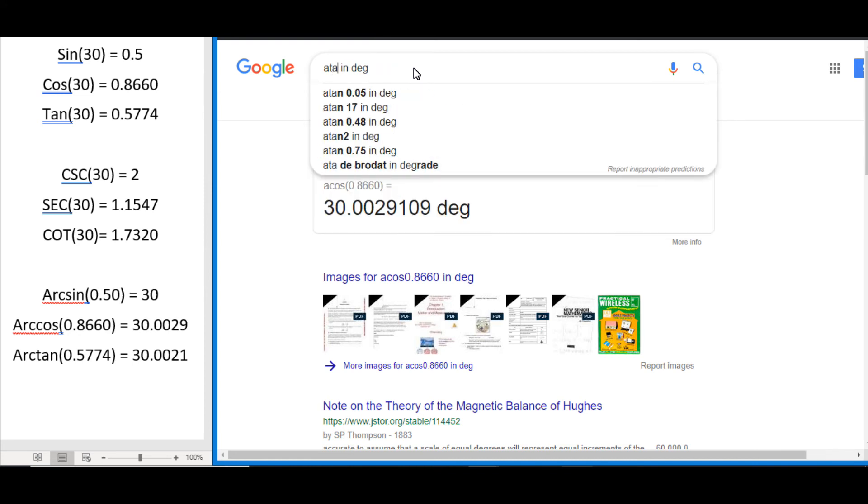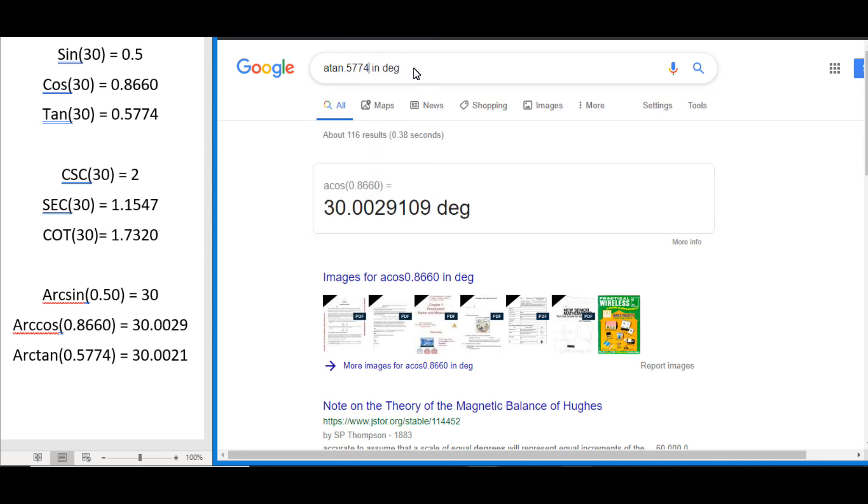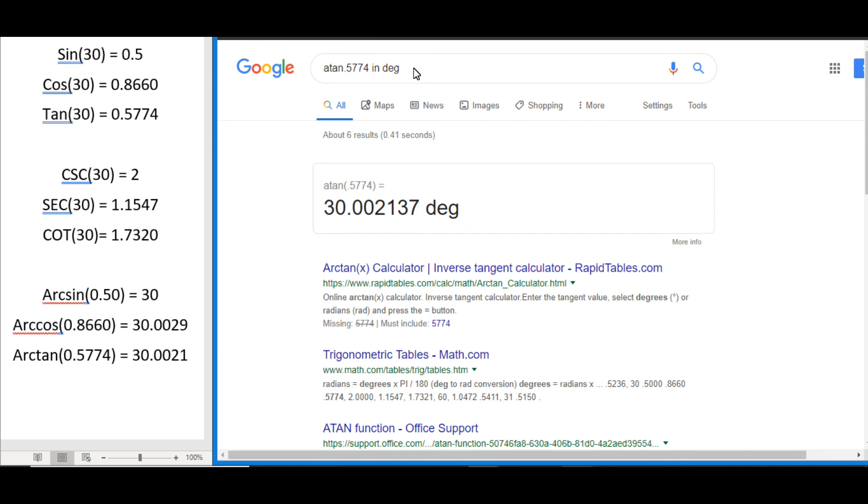And finally we can do the arc tan as well. This time it was 0.5774, and again we get to what would round to 30 degrees.